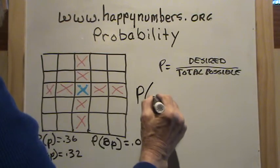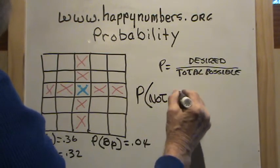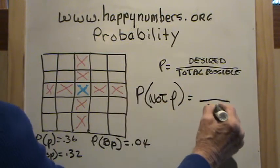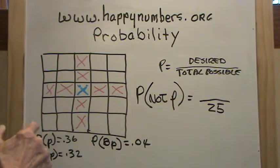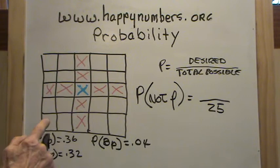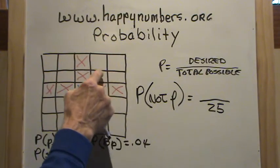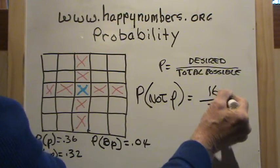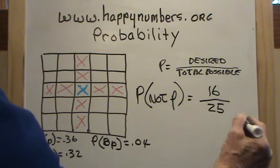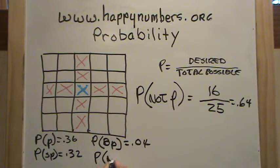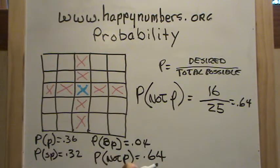What is the probability of getting no prize? We still know our total possible outcomes is 25. To not get a prize, we'd have to land on an empty box. Counting the empty boxes, there are sixteen. So our desired outcome in this instance is sixteen. I worked this out on my calculator: 64 hundredths. So the probability of no prize is equal to 0.64.